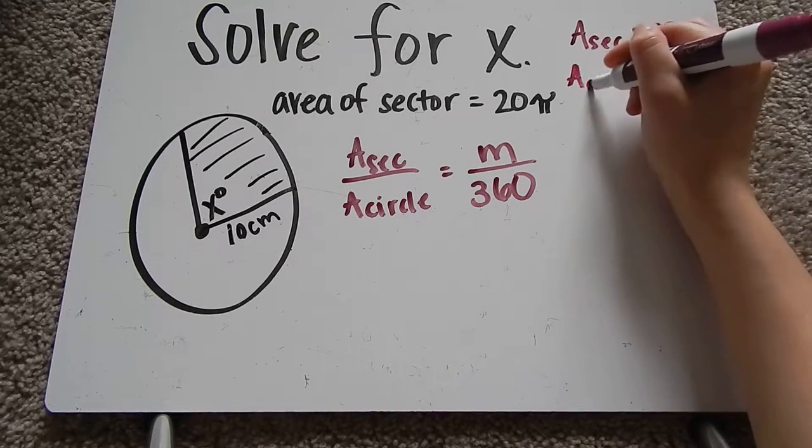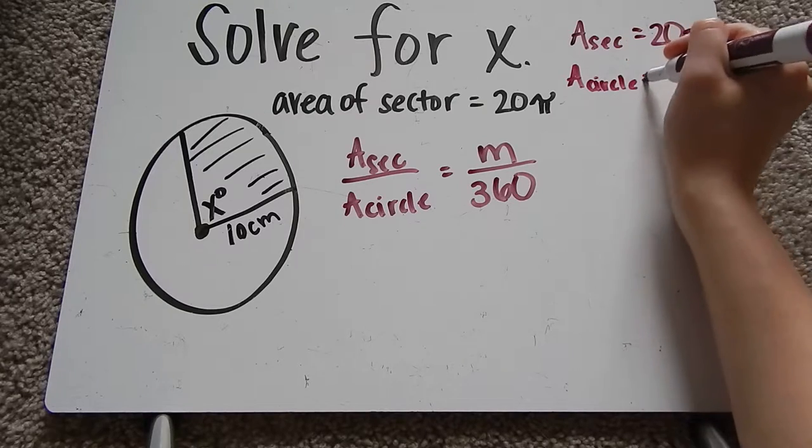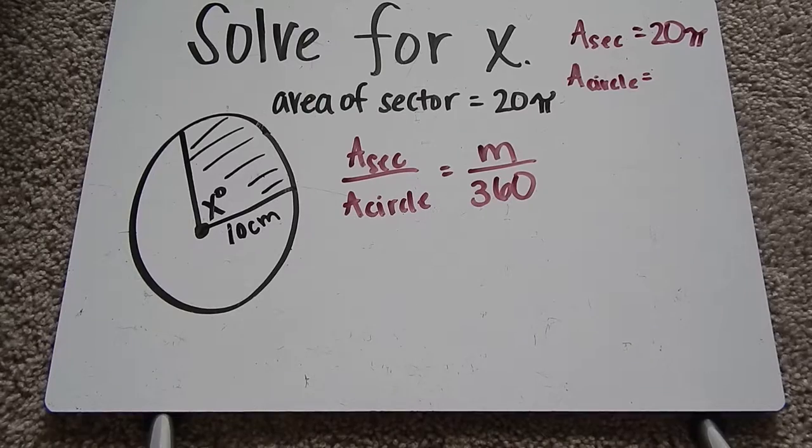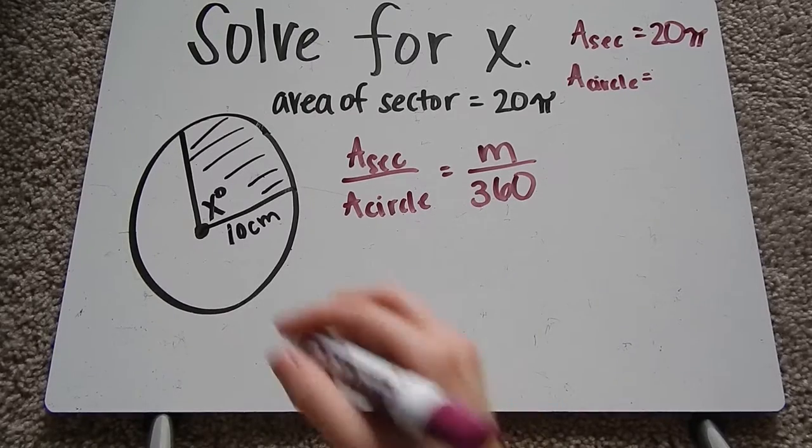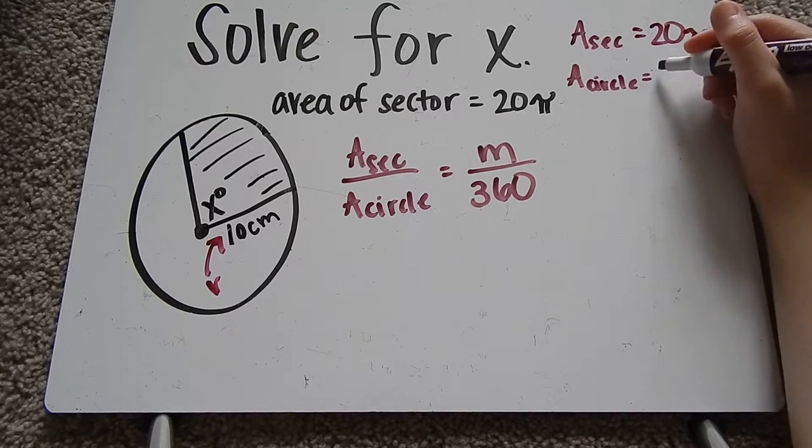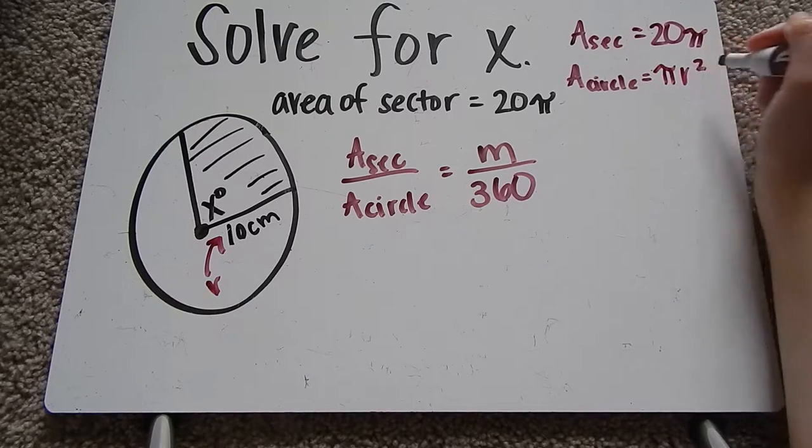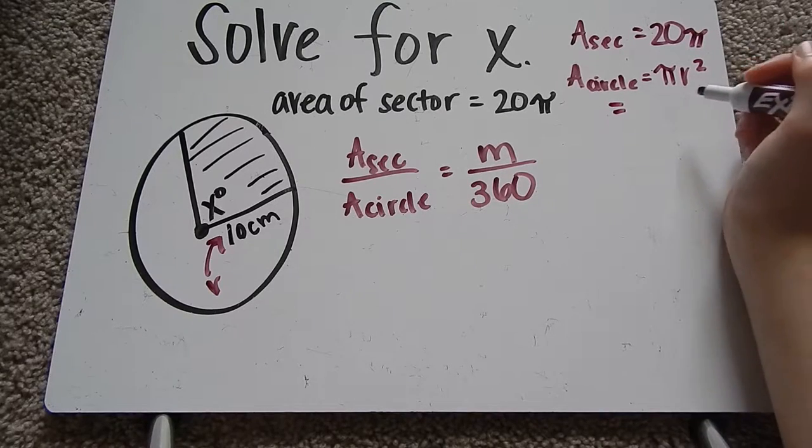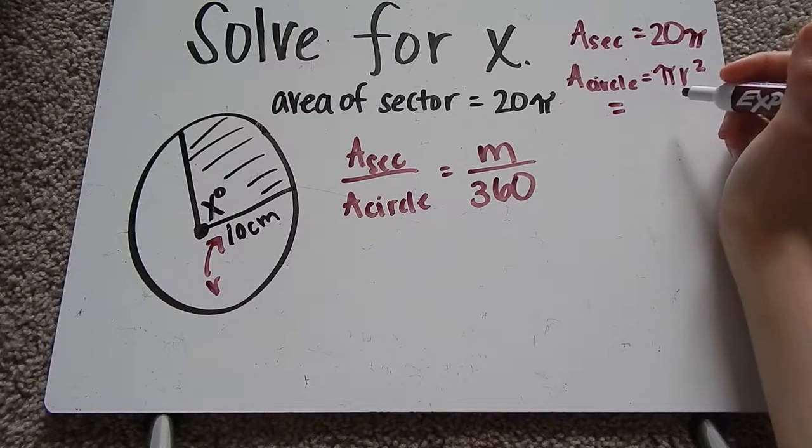Then we have area of the circle. Again, I don't know the area of the circle. It doesn't tell me, but I do have the radius here. So area of the circle is just πr². R is 10. So it's going to be π times 10 squared.